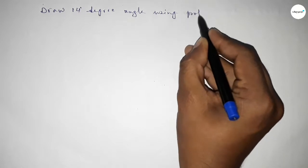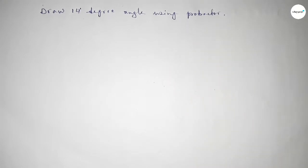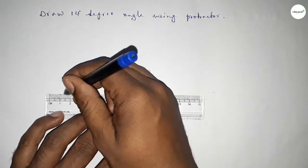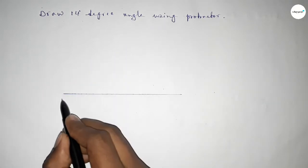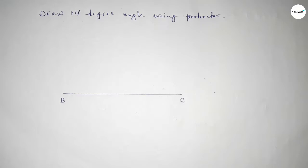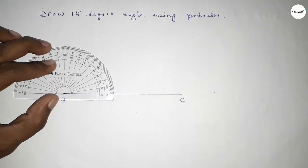So, constructing 14-degree angle. Let's start the video. First of all, we have to draw a line of any length and taking here point B and here point C. Now putting the protractor on point B.